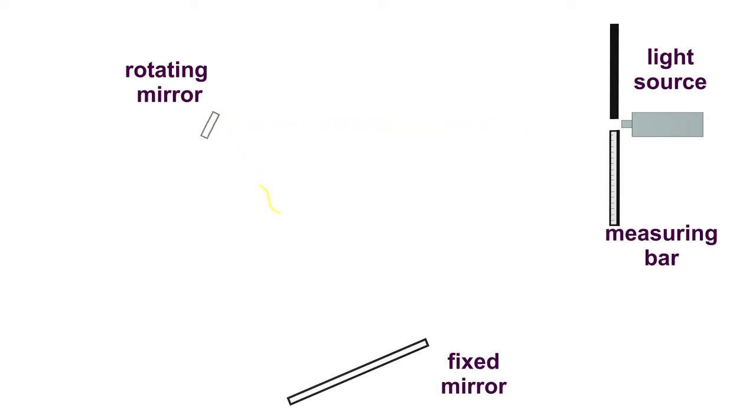Since the rotating mirror has continued to rotate in the meantime and is therefore at a different angle to the light beam, the light beam is no longer reflected back to the starting point but to a point on the measuring strip. The speed of light in the laboratory can be determined by measuring the distance on the measuring strip with the known rotation frequency of the mirror and known distances between the fixed mirror, the rotating mirror, and the measuring strip.